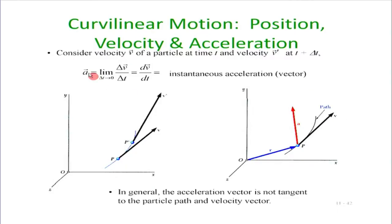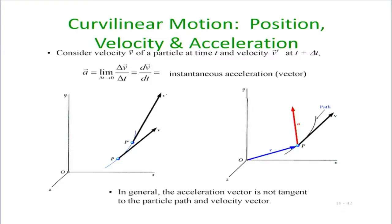Similarly, for acceleration — the acceleration comes not only because of change in magnitude, it may come even if there is no change in magnitude but there is a change in direction. We saw the simple example of uniform circular motion, where the speed remains constant all throughout the trajectory. But the velocity direction keeps changing and as a result there is a normal acceleration.